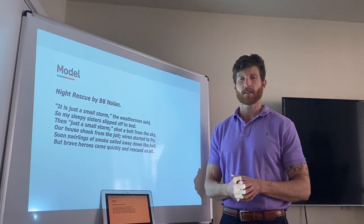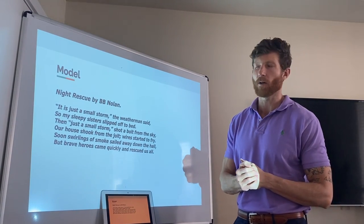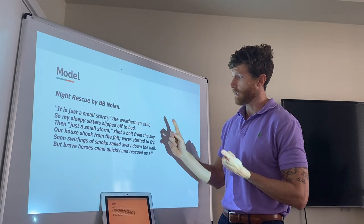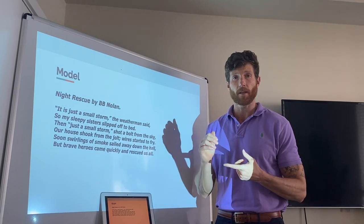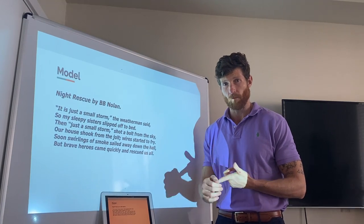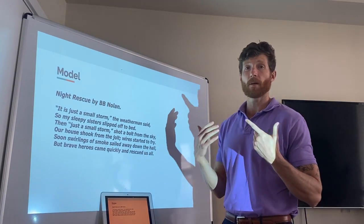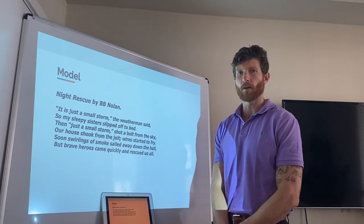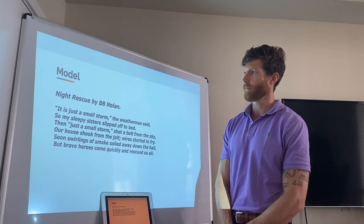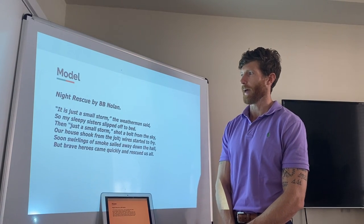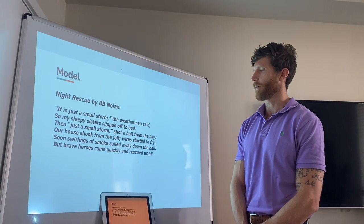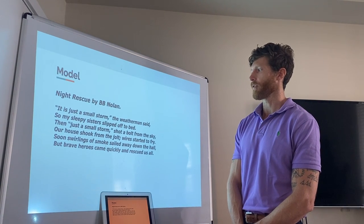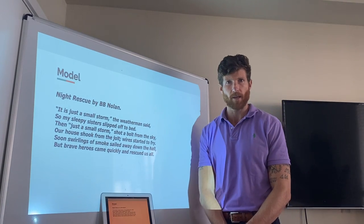For our model today, we're going to start with the poem 'Night Rescue' by B.B. Nolan. As I read, I'm going to be thinking about the rhyme scheme, looking to see which words rhyme, looking for alliteration — repeated consonant sounds at the beginning of words — and looking to see if there's any repetition or any line the author is repeating. 'It is just a small storm, the weatherman said. So my sleepy sisters slipped off to bed. Then just a small storm shot a bolt from the sky. Our house shook from the jolt. Wires started to fry. Soon swirlings of smoke sailed away down the hall. But brave heroes came quickly and rescued us all.'